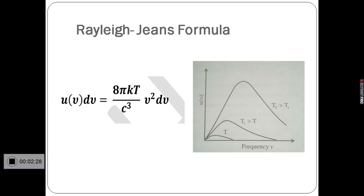But in the actual spectrum, the energy density falls to zero as the frequency tends to infinity. This discrepancy between the prediction of the Rayleigh-Jeans formula and the actual black body spectrum is known as the ultraviolet catastrophe.